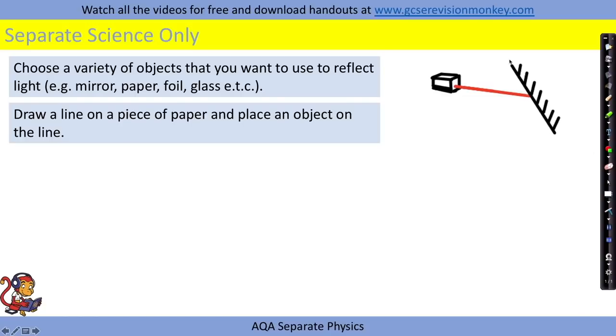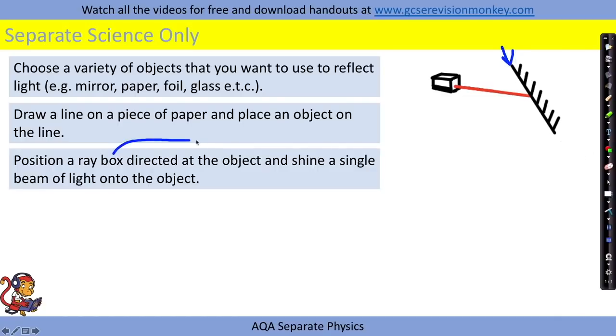You'll draw a line on a piece of paper like shown and place the object on the line. So you'd position a ray box directed at the object and shine a single beam of light like so onto the object.